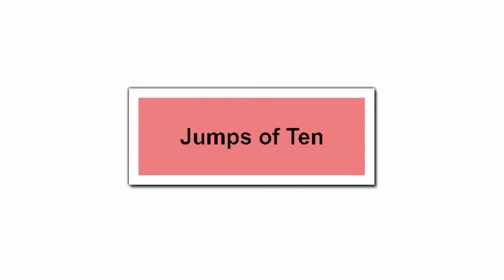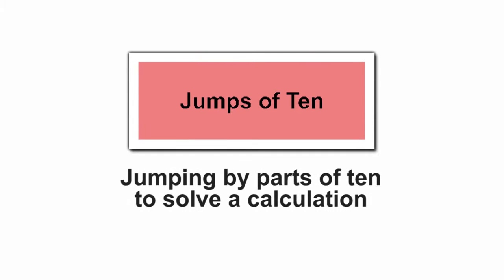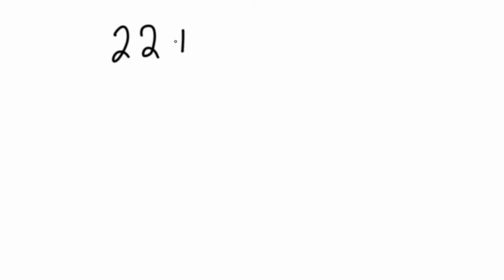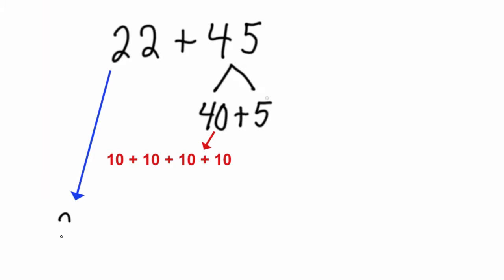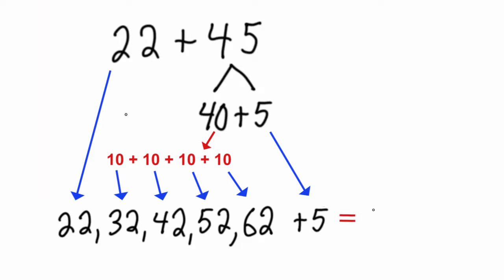Let's try jumps of 10. 22 plus 45. I can decompose 40 and 5 in order to count by four groups of 10. I count 22, 32, 42, 52, 62, and then my 5, which is 67.